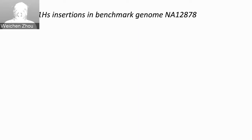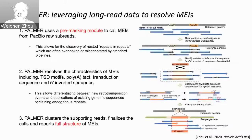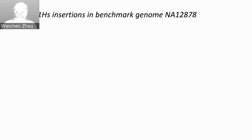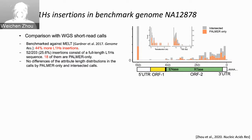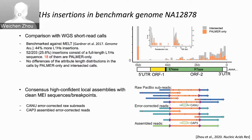We first wanted to benchmark Palmer on one genome, choosing NA12878, and one mobile element insertion type: L1HS. We ran Palmer on the NA12878 genome and resolved 203 L1HS insertions. We then compared our results to the popular mobile element insertion caller MELT, and found that about 44% more L1HS insertions were absent in the MELT calls.